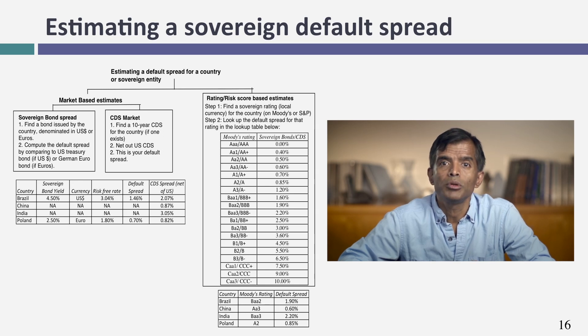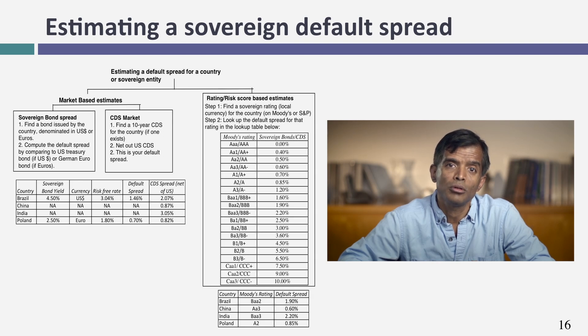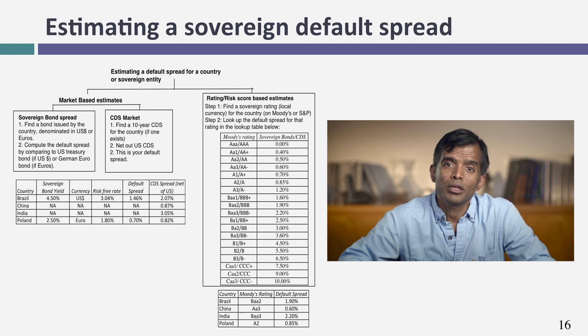So you have two market-based measures: the CDS market spread and the government bond denominated in dollars or euros. But what if you can't find either? In November of 2013, India had no CDS spread and did not issue dollar-denominated bonds, but it did have a sovereign rating. The third approach: use the sovereign rating for the country and look up a typical default spread for that rating. I create a lookup table at the start of every year, taking all sovereign countries, their ratings, and estimating average spreads for each ratings class. Each of these three approaches gives you a spread; use whichever you can. If none works, it may be time to switch to a different currency.